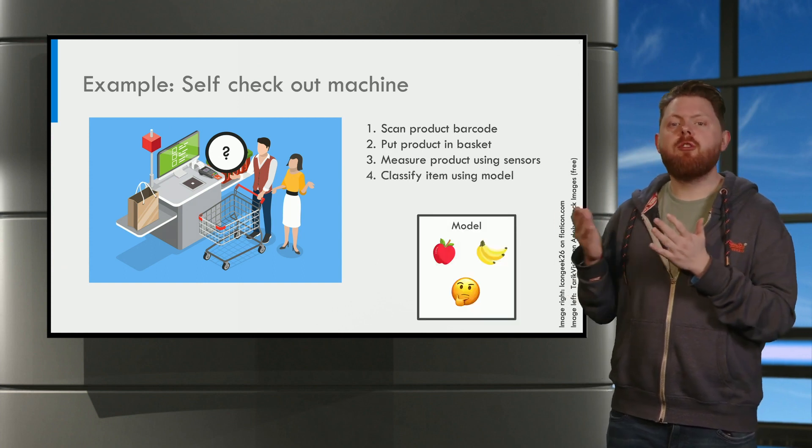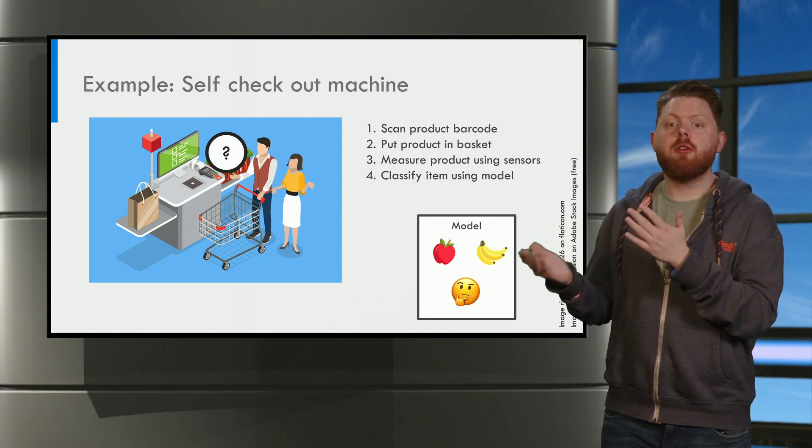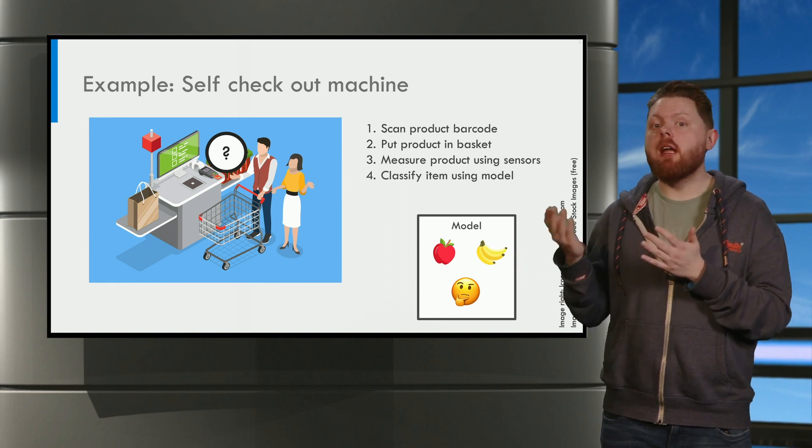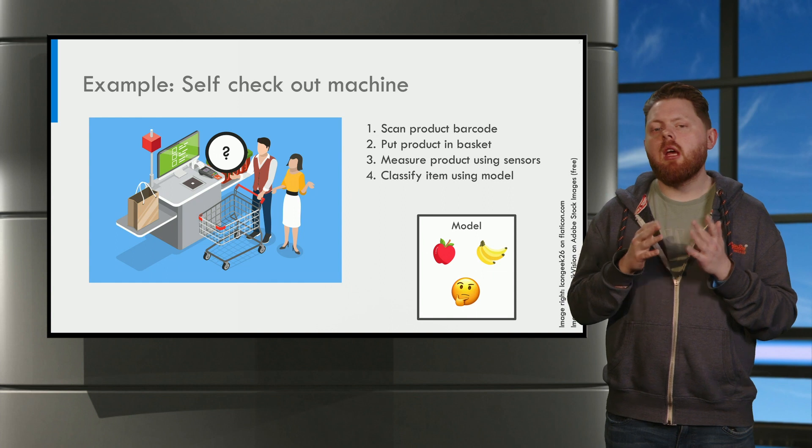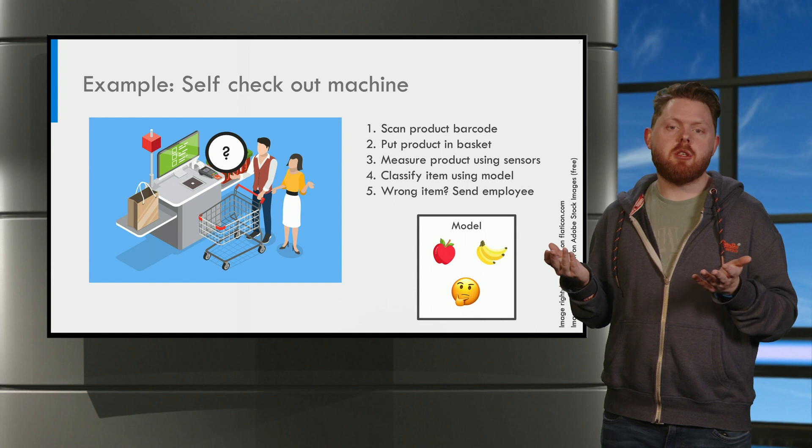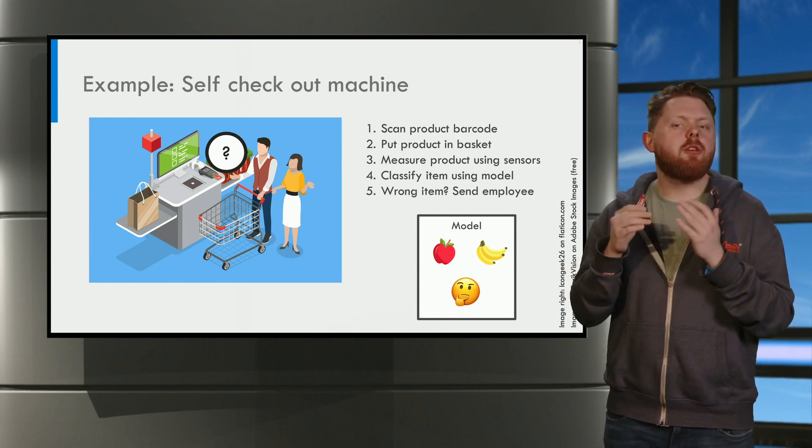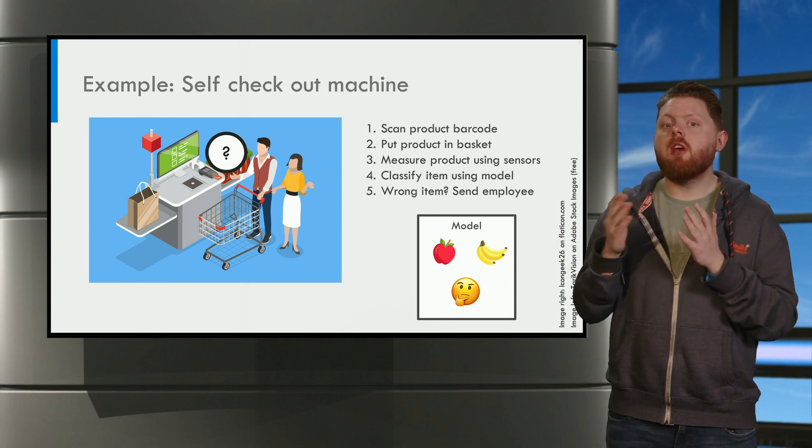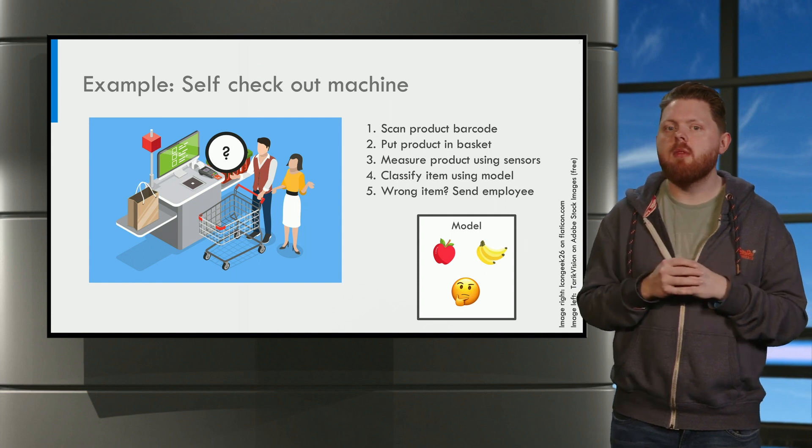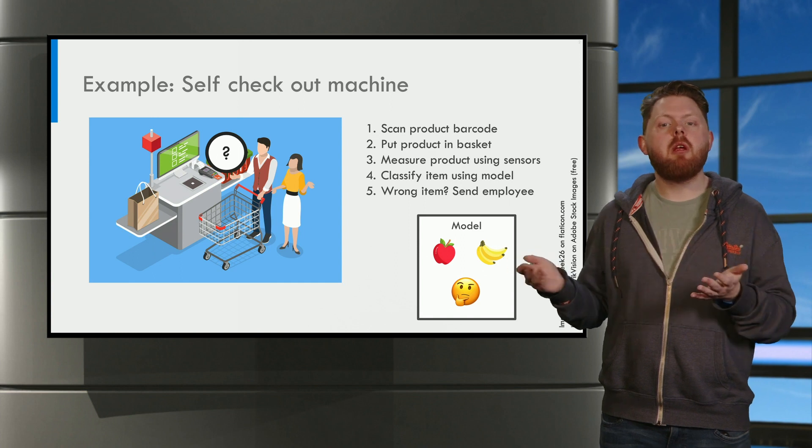Now a model uses these features as input and will try to predict which product it is, called the class. Is it an apple or is it a banana, etc. If the predicted class agrees with the scanned barcode, nothing happens. However, if the predicted class does not agree with the scanned barcode, the self-checkout machine suspects that you secretly switched items. In this case it could for example send an employee to check your products.